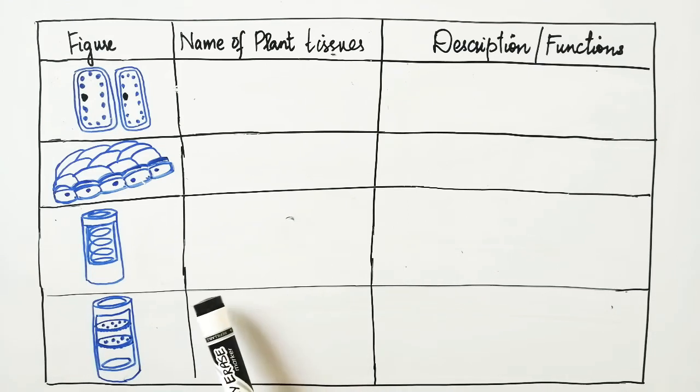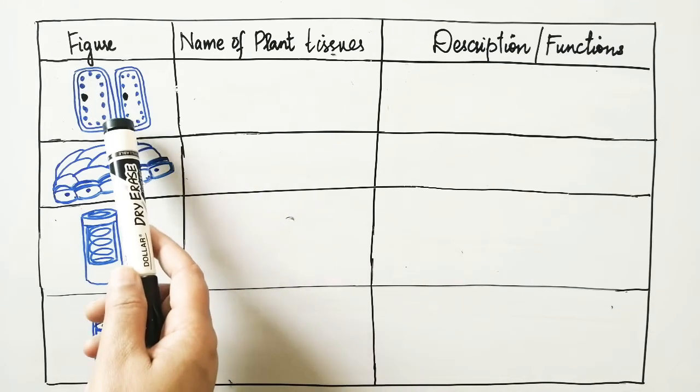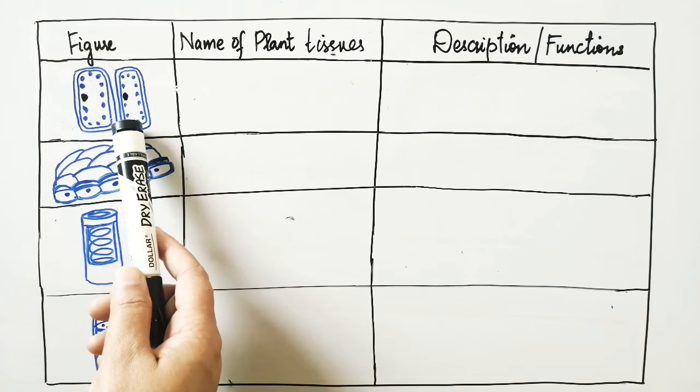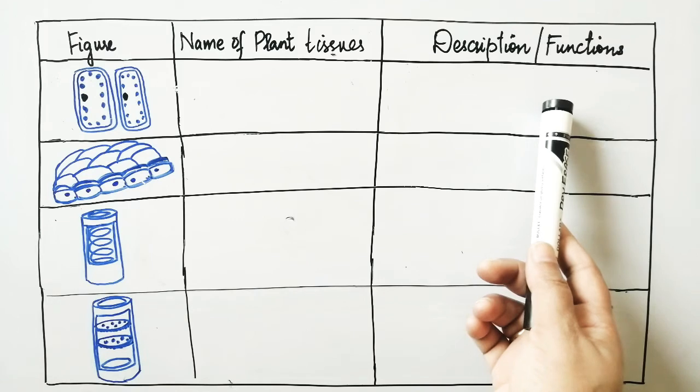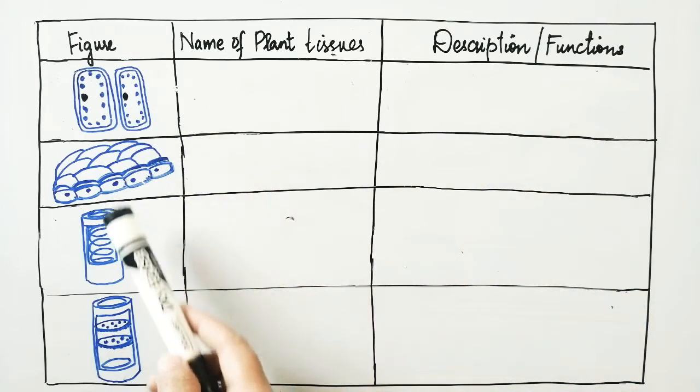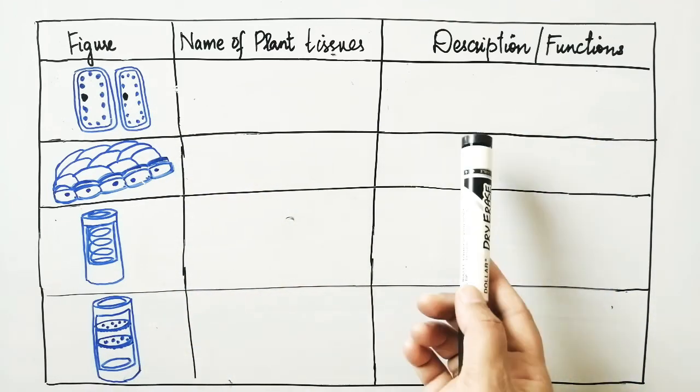Dear student, this is your second table and the second worksheet of today's lecture in which you have to first recognize these plant tissues, write down their name in front, and also the description or function of each of these plant tissues in the space provided to you.